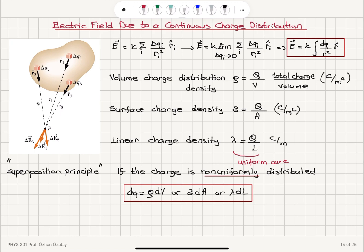If this is a uniform distribution, then rho would be equal to Q over V, sigma would be equal to Q over A, and lambda would be equal to Q over L.